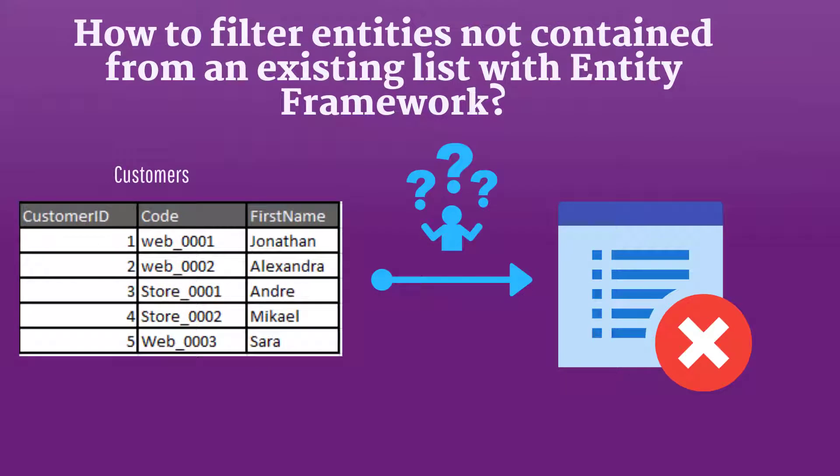First, how to filter entities not contained from an existing list with Entity Framework? Filtering entities by excluding all items from an existing list can sometimes be very useful. For example, you deserialize a JSON file into a list of customers with the customer IDs populated, and you want to retrieve customers not contained in this list to delete them.